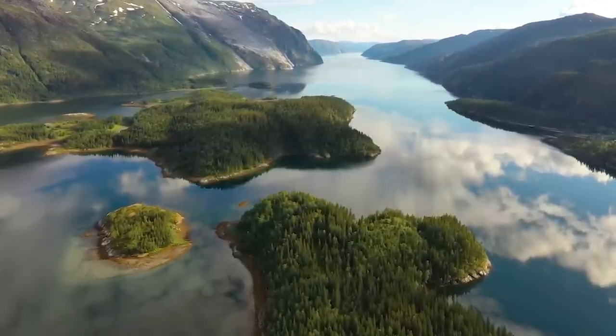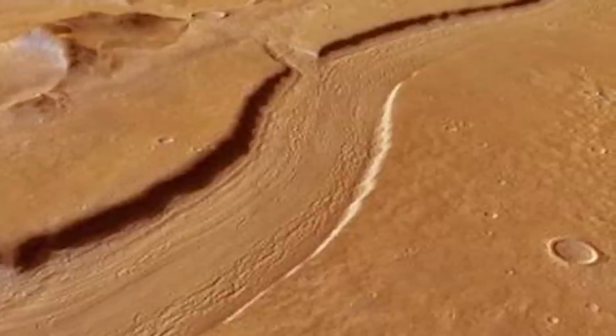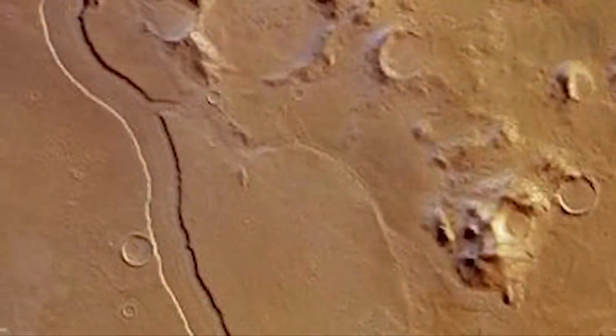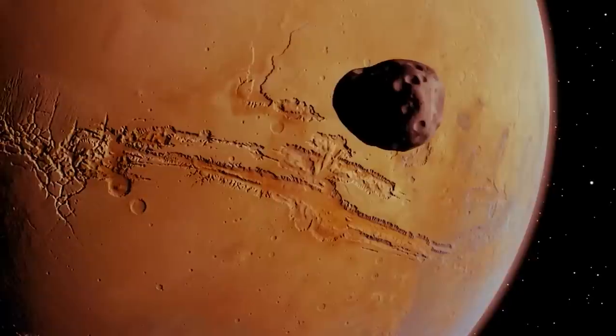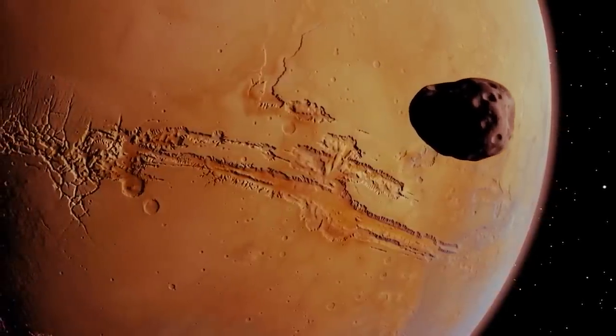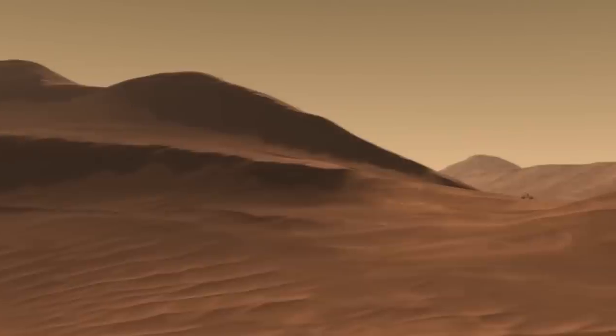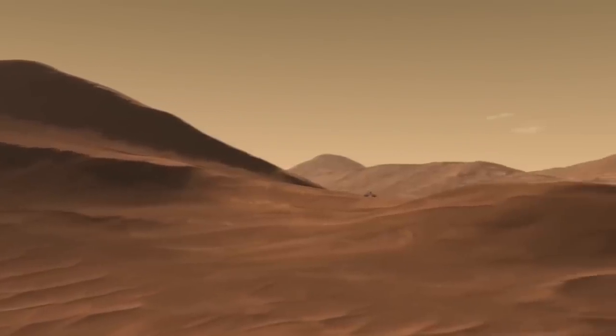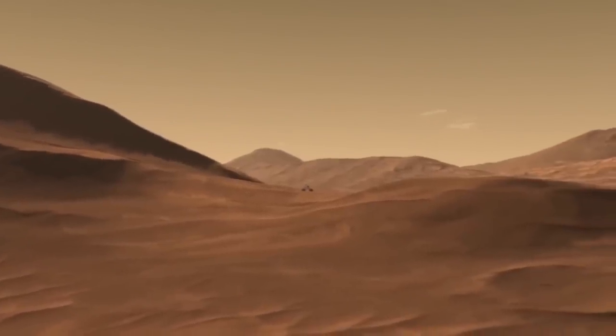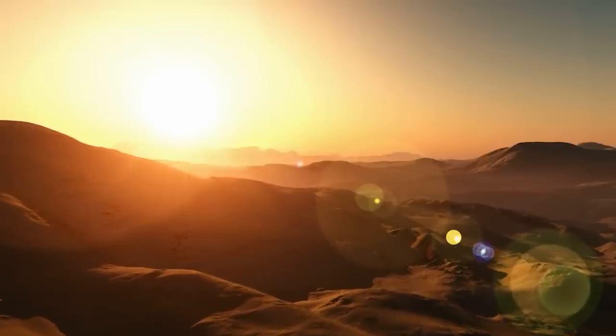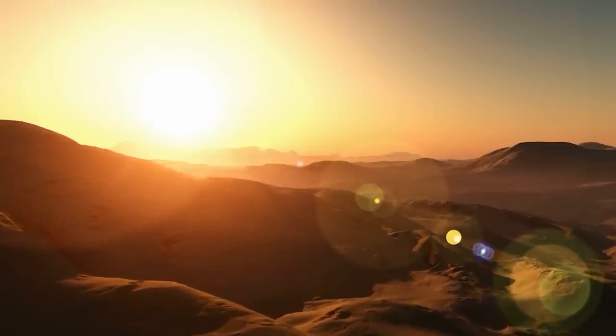Water would have once flowed on Mars since, on some photographs, it seems that there are, like riverbeds and their tributaries. Mars is mostly made of rock and metal. Its average temperature is around minus 63 degrees or minus 81 degrees Fahrenheit.